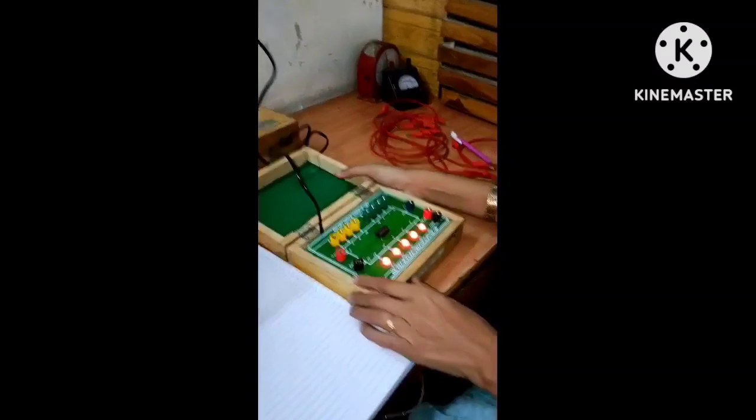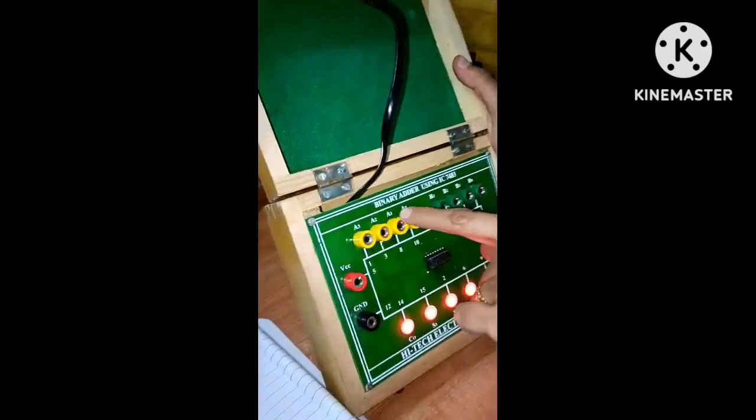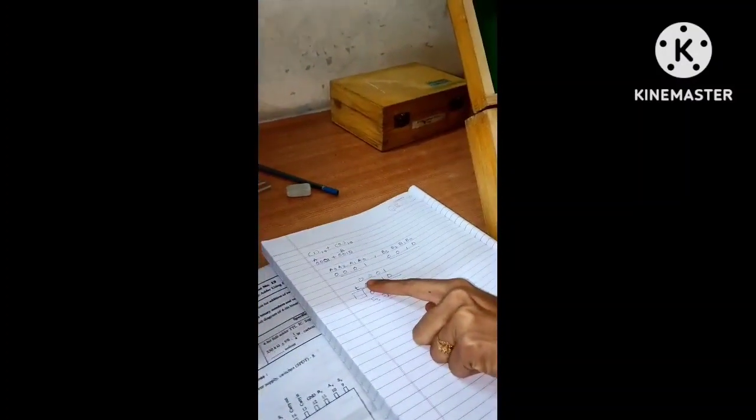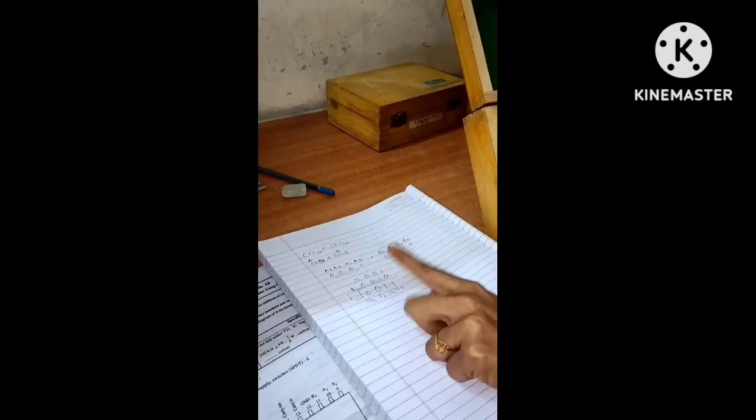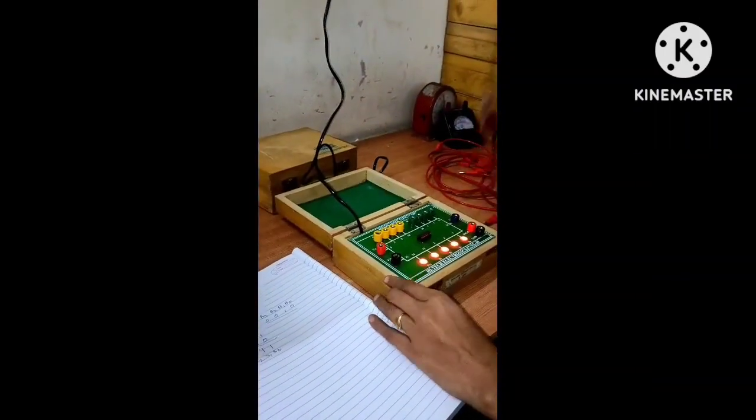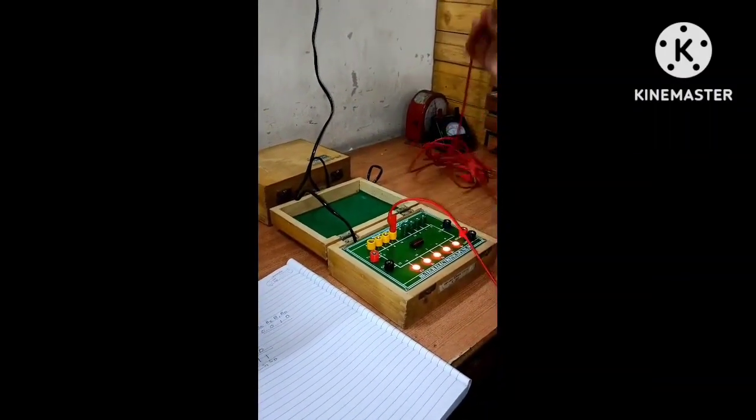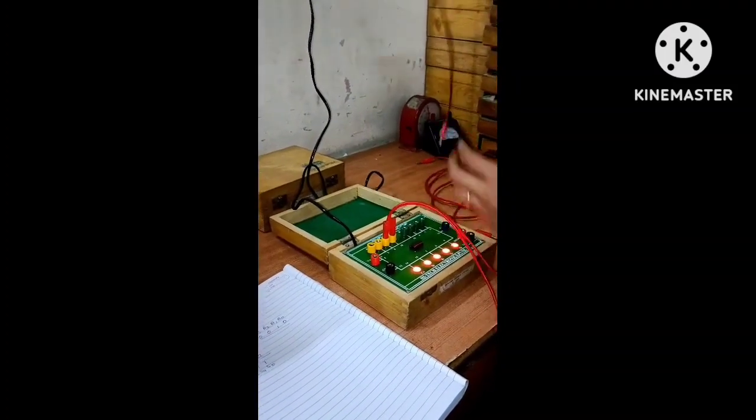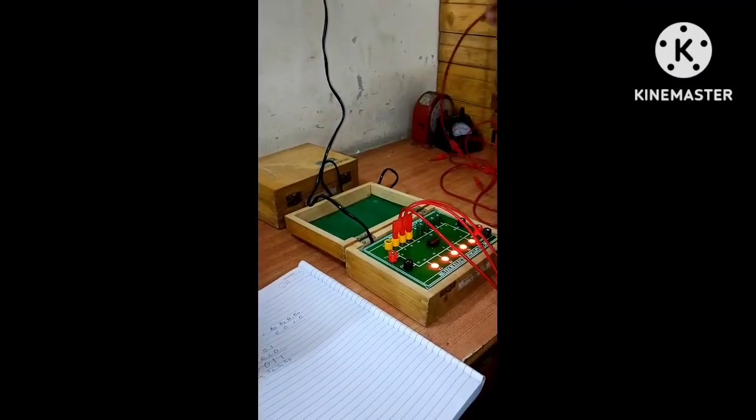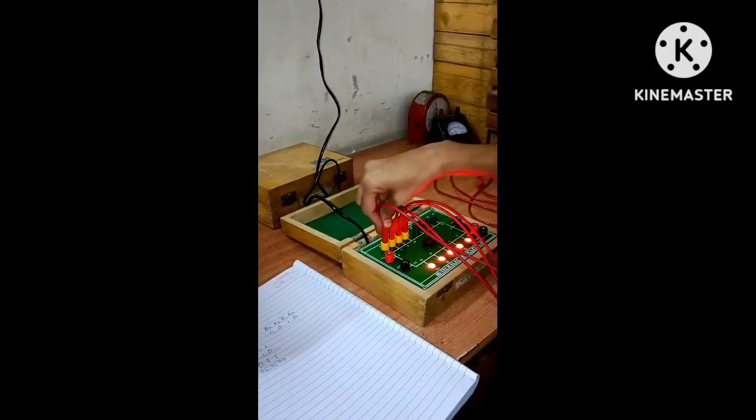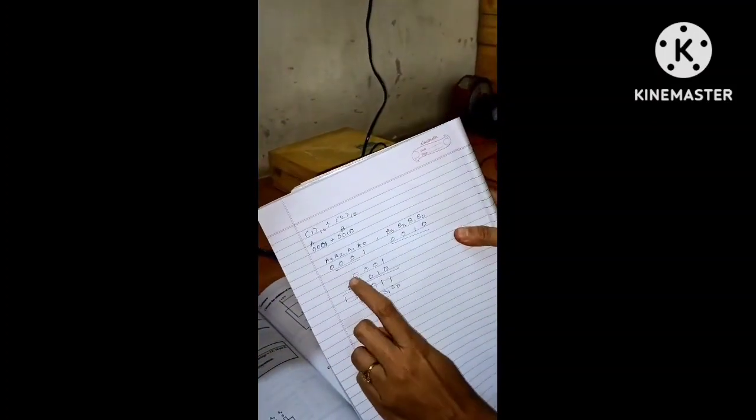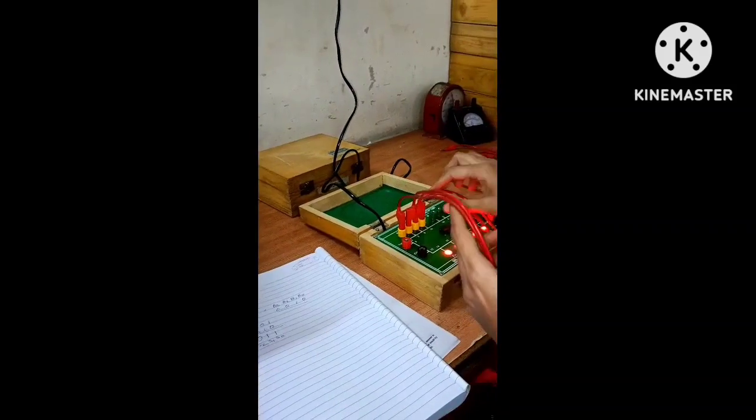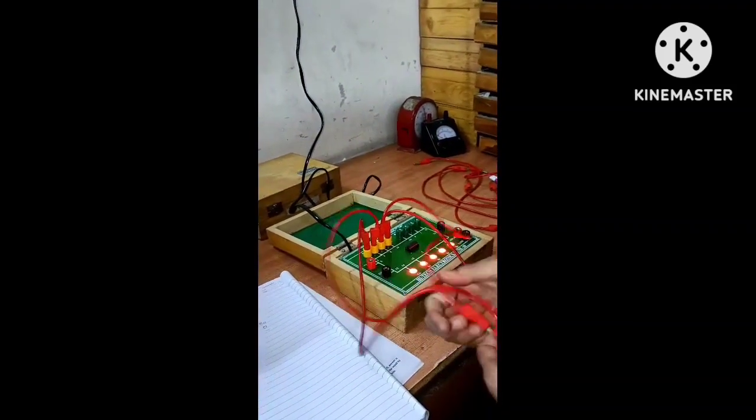So first here are the data pins A3, A2, A1, A0. The data we have selected for A is 0001. So we will connect these 4 pins for data A. Since A3, A2, A1 are all 0, we need to ground these three pins.